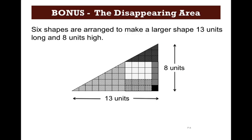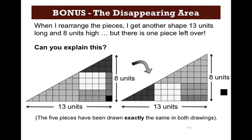And the last thing we have is a bonus. This will be number 8 on your paper. Six shapes are arranged to make a larger shape, 13 units long and 8 units high. So we have a triangle that's 8 units high, 13 units wide, and you'll see all these little different colored pieces colored in. Now, when I rearrange the pieces, I get another shape, 13 units long and 8 units high, but there's a piece left over. So if you look here, I still have 13 units wide and 8 units high. I use the same amount of pieces. If you count them all up, they're all the same, except a black piece is left over. Can you explain this?